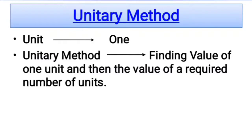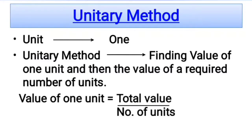The formula to find out single unit value is: total value divided by number of units.